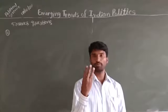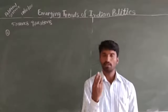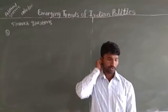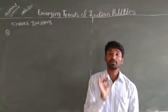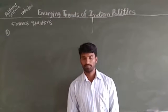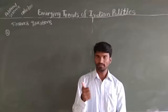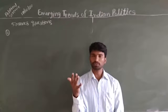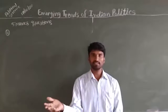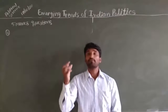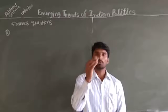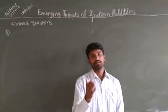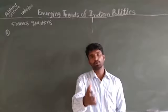Question number six: explain the method of distribution of powers found in the subject lists. This power is divided into three lists: the Union List, the State List, and the Concurrent List. The Union Subject List consists of 100 subjects, including defense, banking, currency, coinage, mining, and foreign currency — these are very important factors where the central government has supreme power.